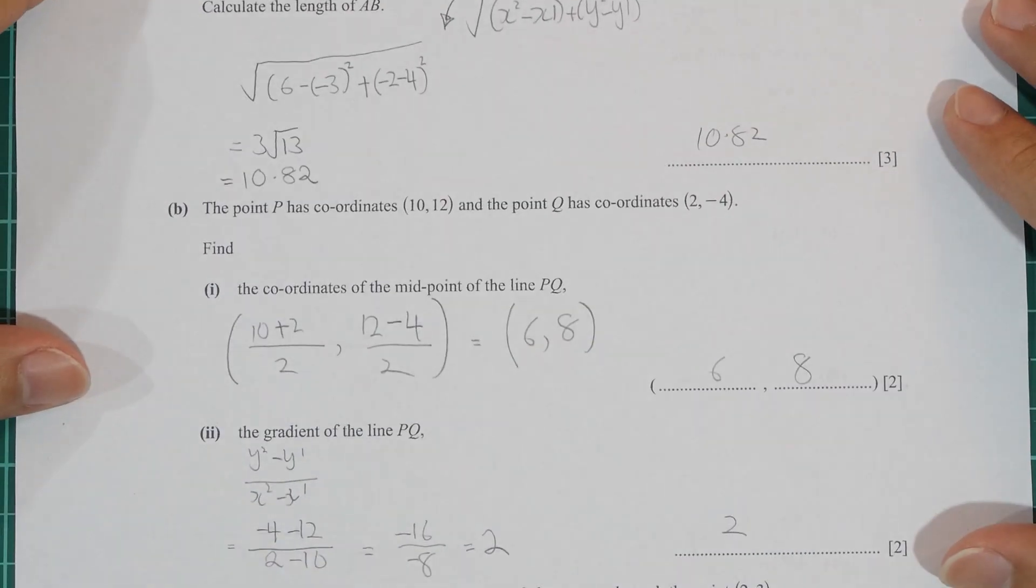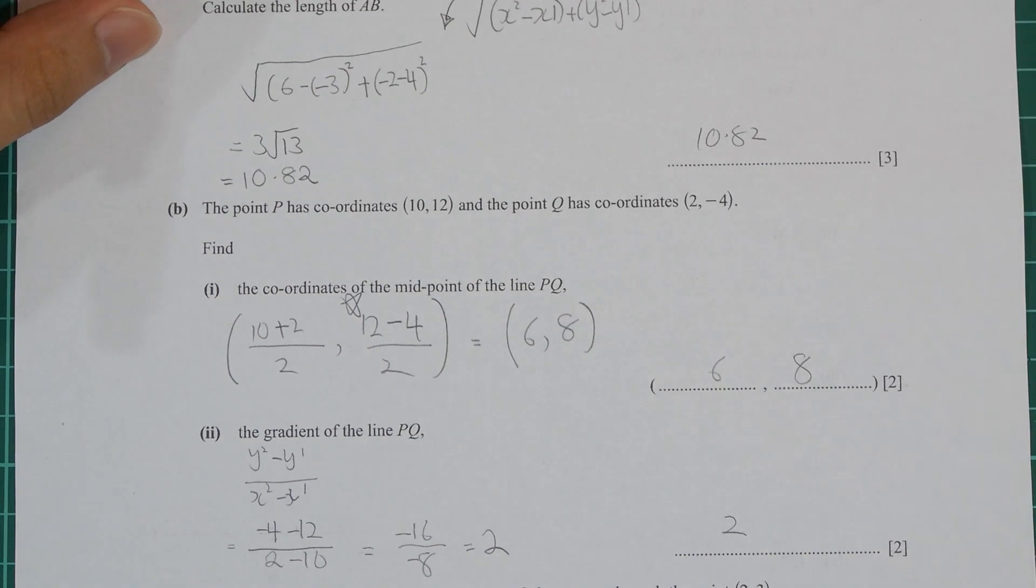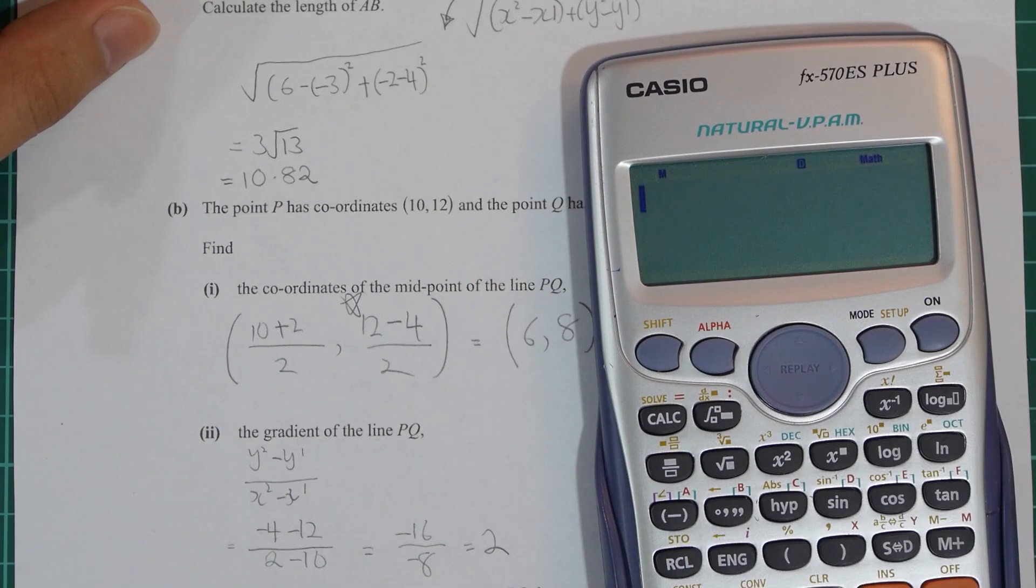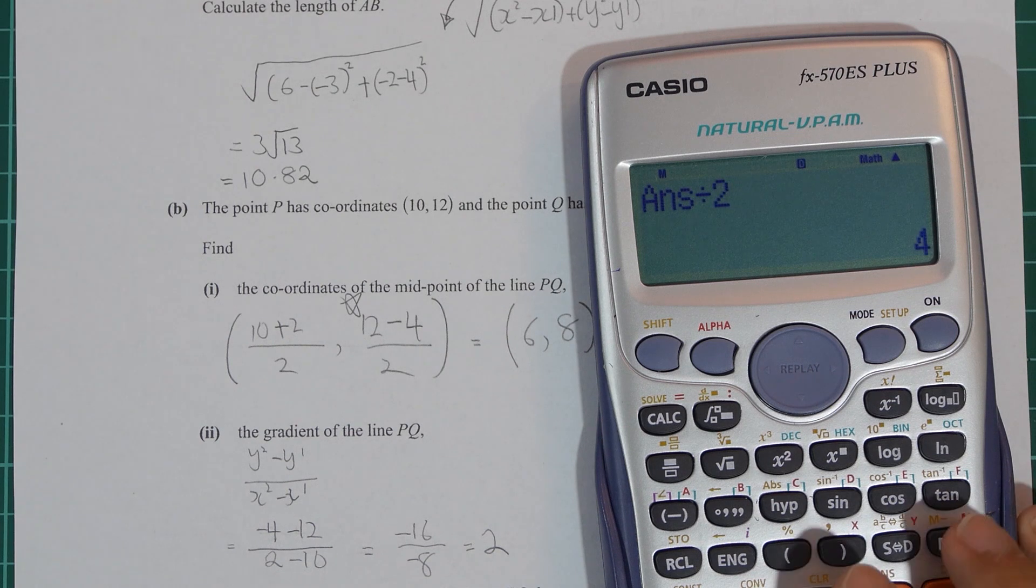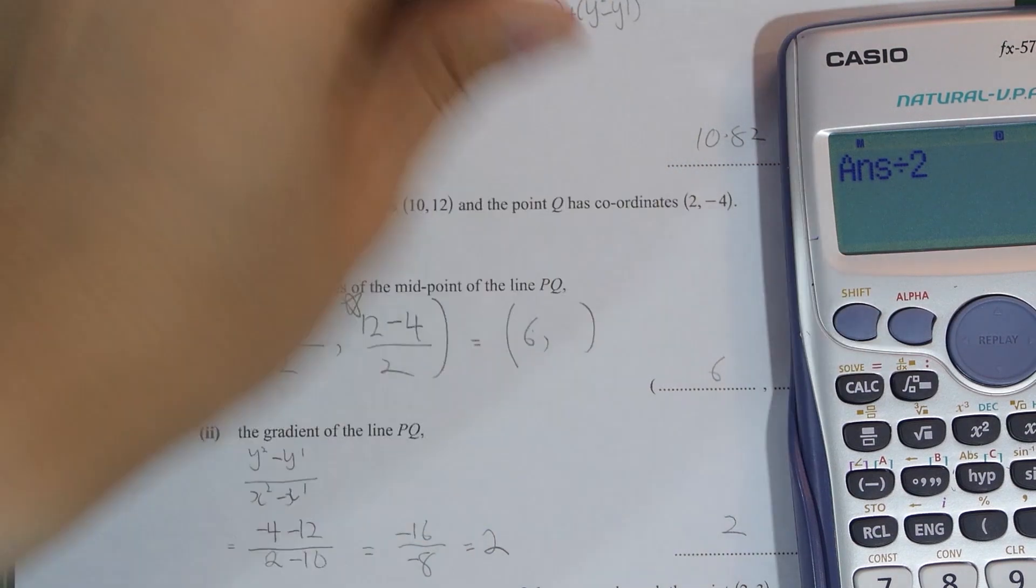And lastly, question 10B part 1. This was also identified by Yassin. It's for the y-coordinate. It should be 12 minus 4 divided by 2.